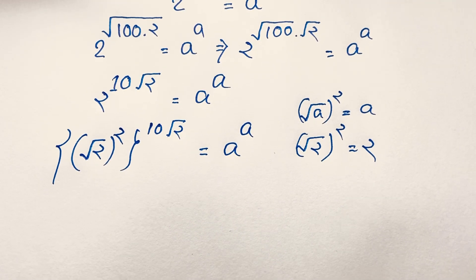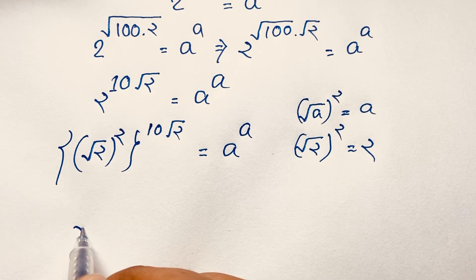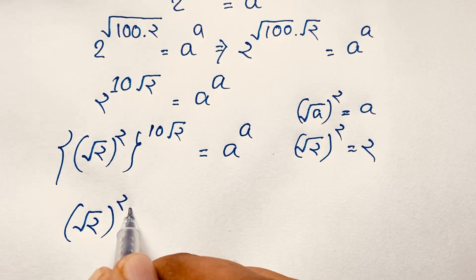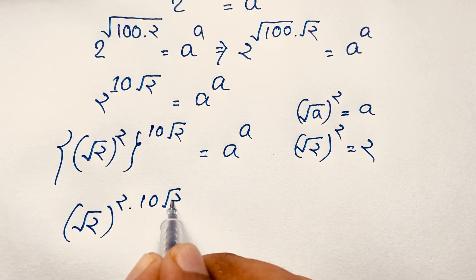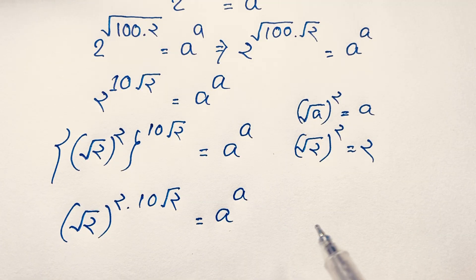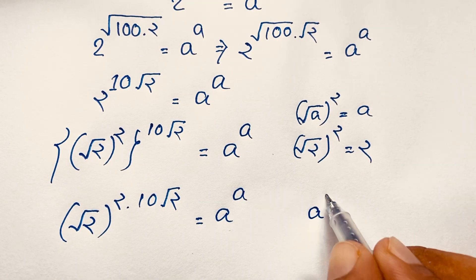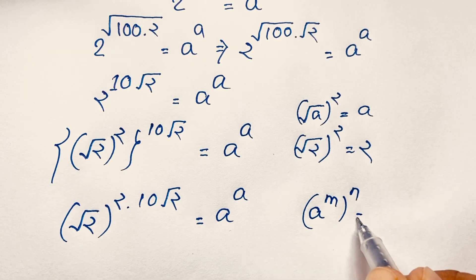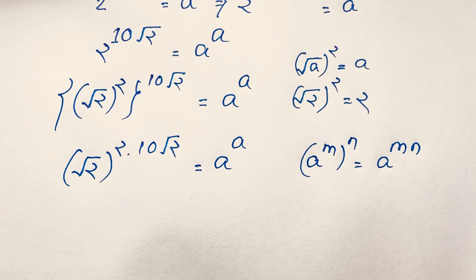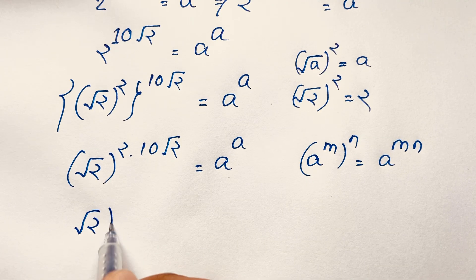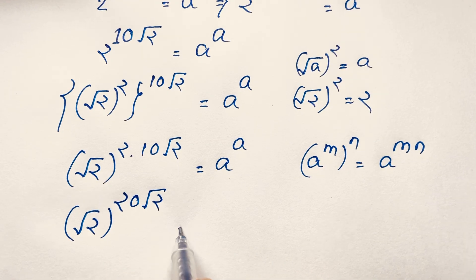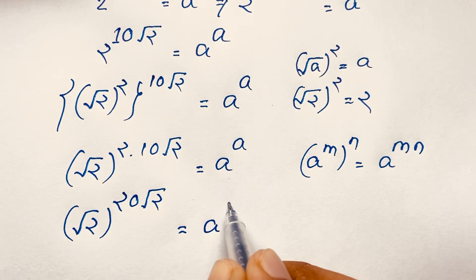In this expression, we have (√2)^2 times 10√2 equal to a to the power a. According to the exponential law, a^m whole to the power n equals a^(mn). Applying this, (√2) bracket power 2 times 10 gives 20, so (√2)^20 times √2 equals a to the power a.